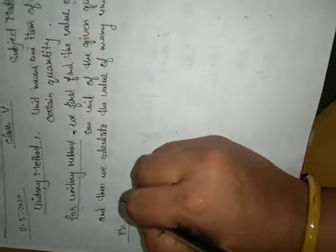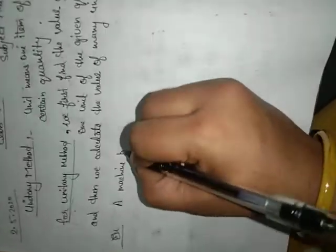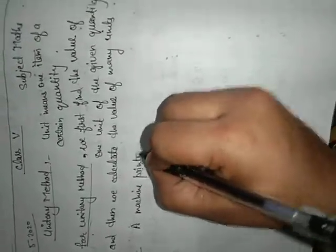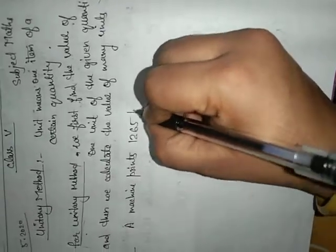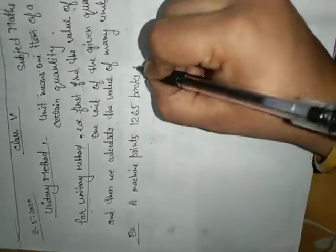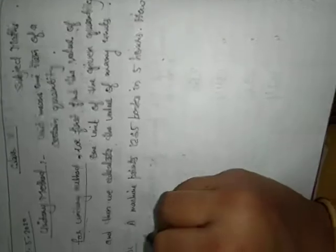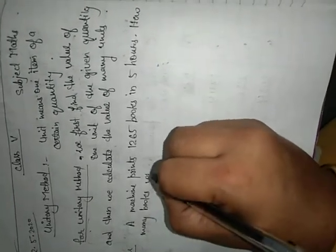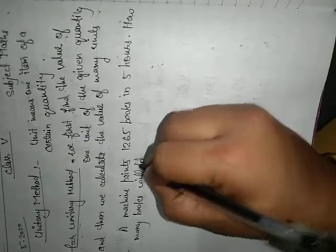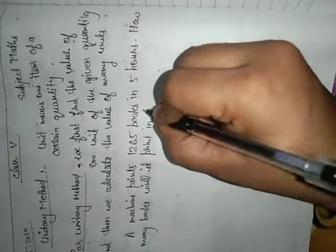A machine prints 1,265 books in 5 hours. How many books will it print in 8 hours?